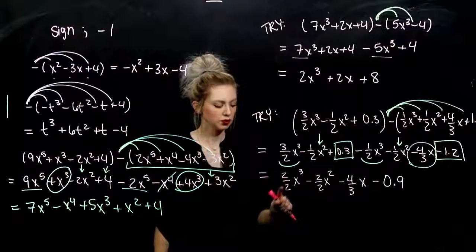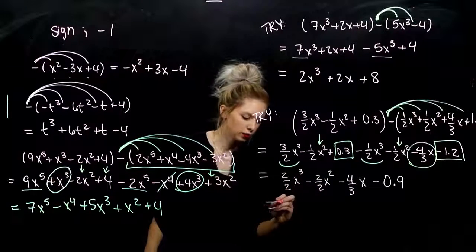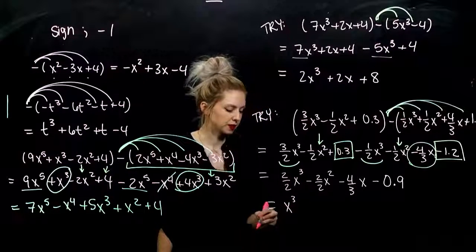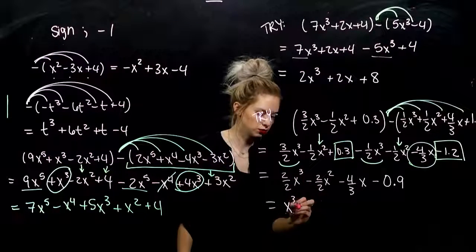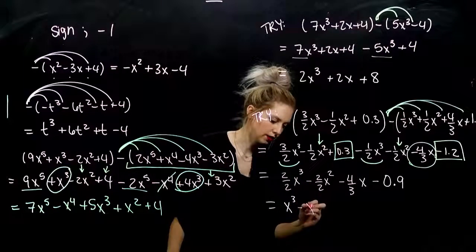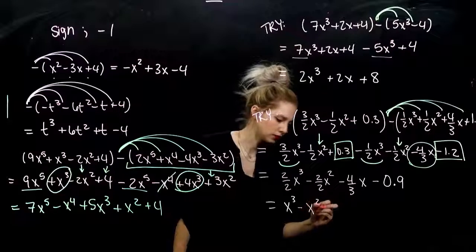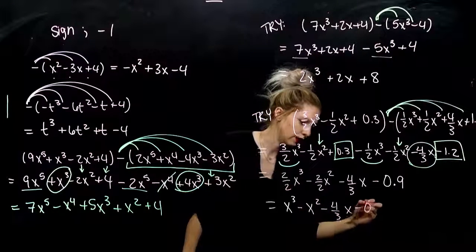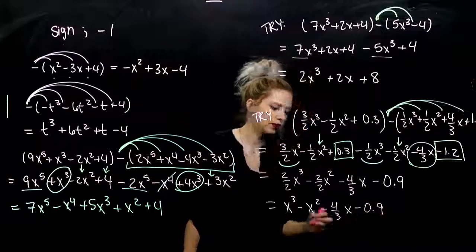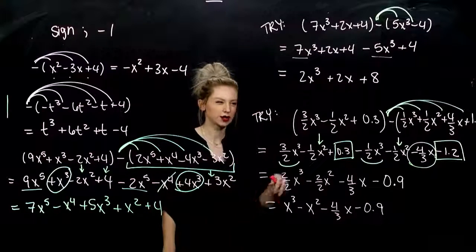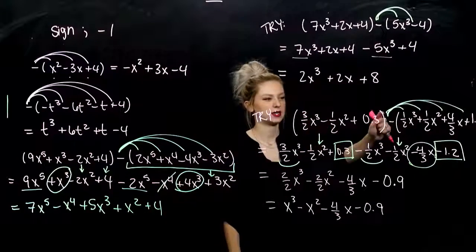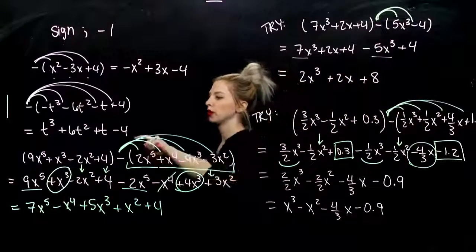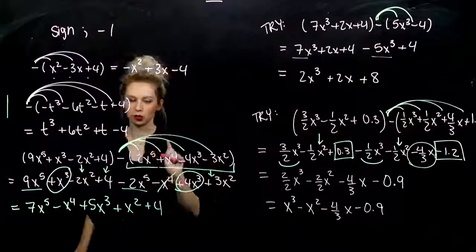We don't want to leave it in that form — simplify. 2 divided by 2 is 1, so 1 factor of x cubed. Negative 2 over 2 simplifies to negative x squared. Can't simplify the others, so we're done. For subtraction, those parentheses on the second polynomial are super duper important.